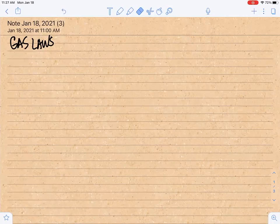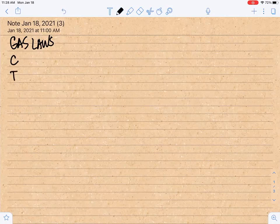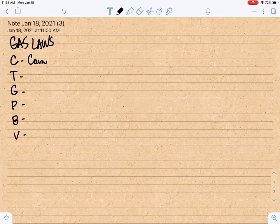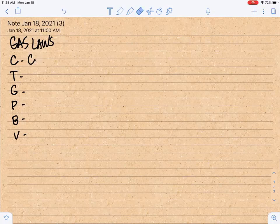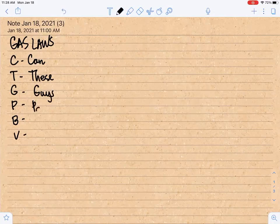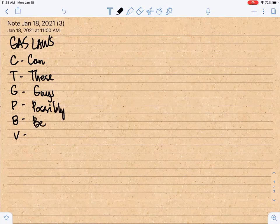So we will be using letters: C, T, G, P, B, and V. We will be putting words into these letters as your guide. Can these guys possibly be victorious.